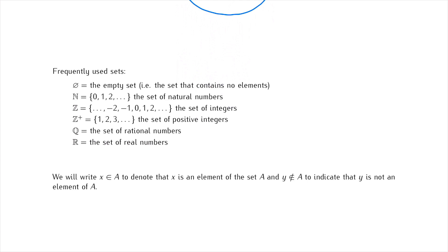The first set on this list is the empty set, which is the smallest set of all because it contains no elements. The symbol for this set is the crossed circle. The second set is the set of natural numbers, denoted by this thickened N, which consists of all integers greater than or equal to 0 — so this is the set consisting of 0, 1, 2, and so on.